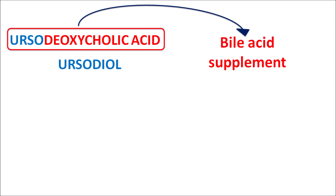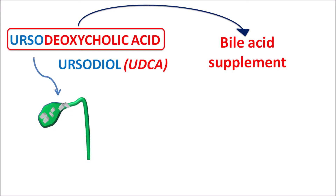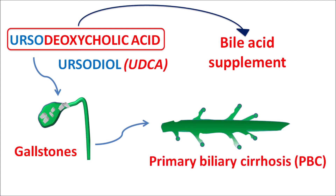Ursodeoxycholic acid, well known as UDCA, can be given to treat gallstones. These gallstones are rich in cholesterol, producing cholesterol cholelithiasis. The formation of gallstones can stimulate primary biliary cirrhosis, in which we observe narrowing of bile ducts, reduced biliary secretion, increased biliary pain, and ultimately cholestatic cirrhosis affecting the liver.